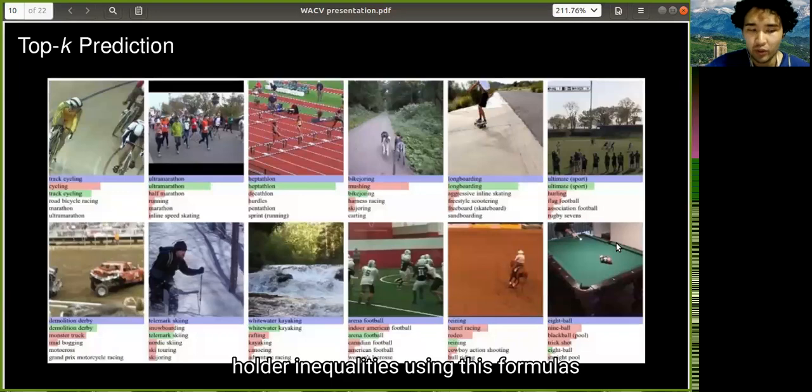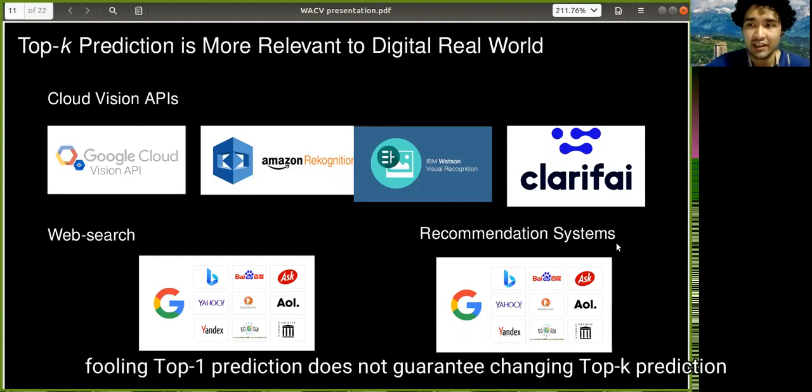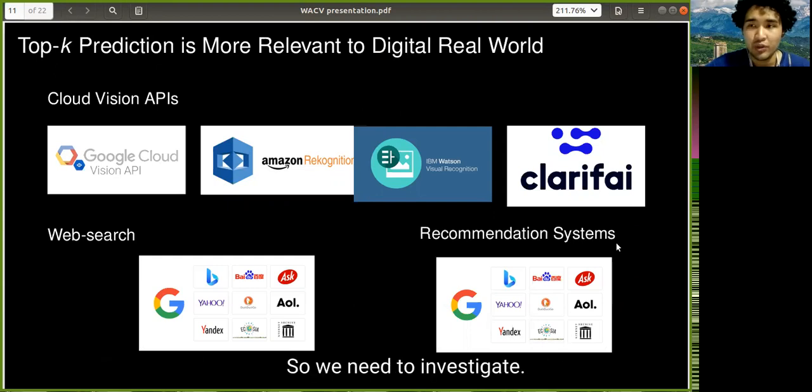But in the real world, top-k prediction is much more relevant and important. For example, in cloud vision APIs and web search recommendation systems, we all get top-k predictions instead of top-one prediction. And fooling top-one prediction doesn't guarantee us changing top-k prediction. So we need to investigate top-k attacks.